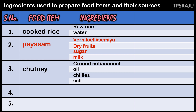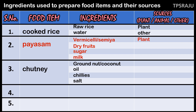In the fourth column we are going to write sources of food ingredients. We get raw rice from plant, water from other sources. Vermicelli or seviyan is prepared from wheat flour, so the source is plant. Likewise, let's complete the table.